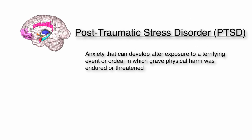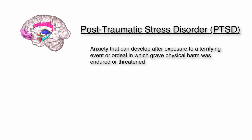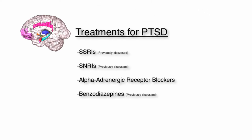Post-traumatic stress disorder, or PTSD, is characterized by anxiety that can develop after exposure to a terrifying event or ordeal in which grave physical harm was endured or threatened. It is commonly seen in military veterans. The treatments for PTSD include SSRIs, SNRIs, alpha-adrenergic receptor blockers, and benzodiazepines. The goal of SSRIs, SNRIs, and benzodiazepines is to reduce feelings of anxiety, often caused by an imbalance in the mesolimbic system.